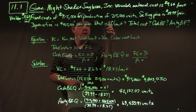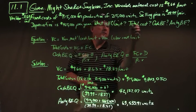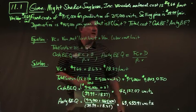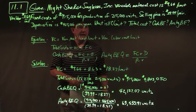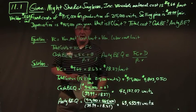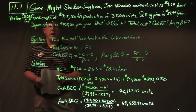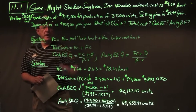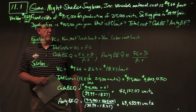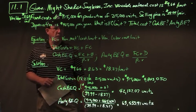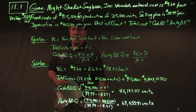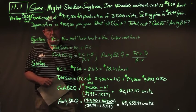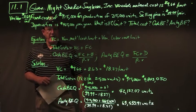We need to find: variable cost per unit, total cost, cash break-even quantity, and accounting break-even quantity. Variable cost equation is variable material plus variable labor. Total cost is fixed cost plus variable cost.